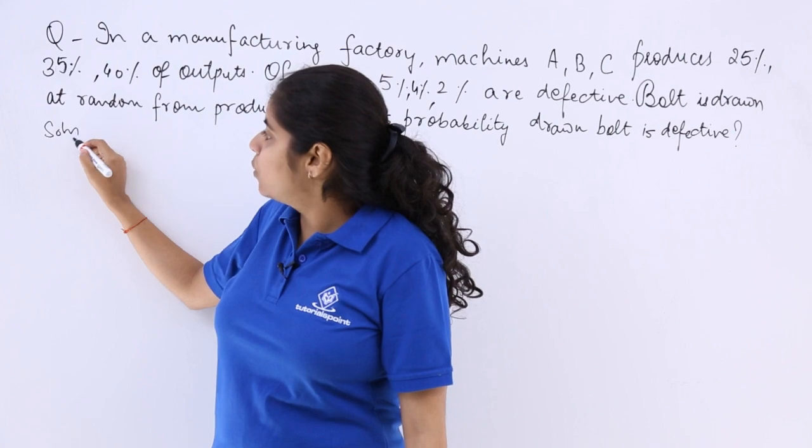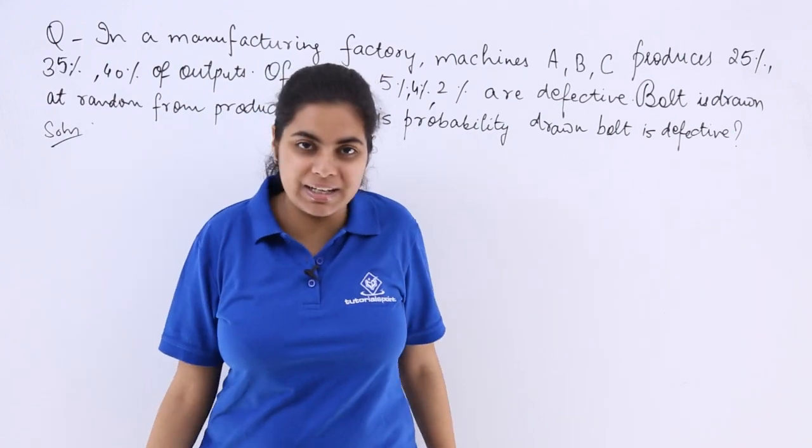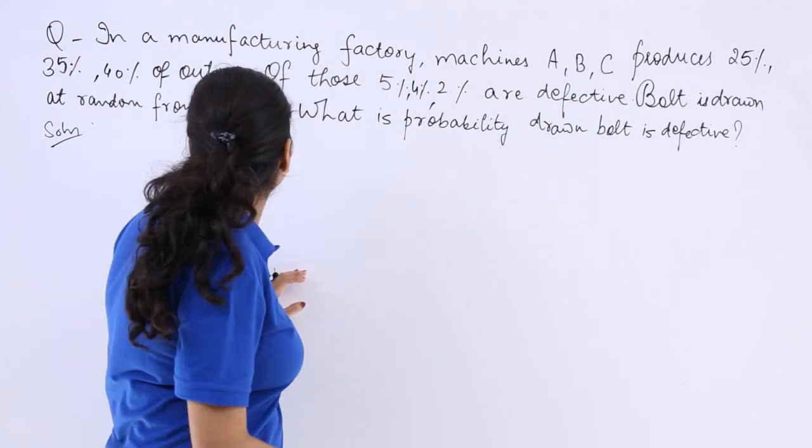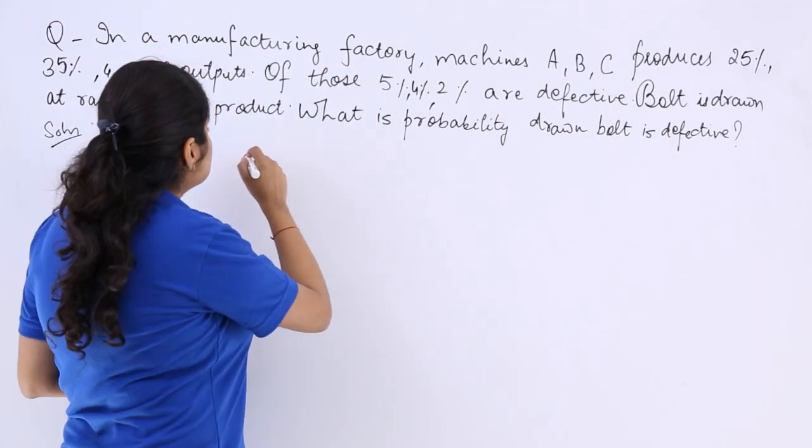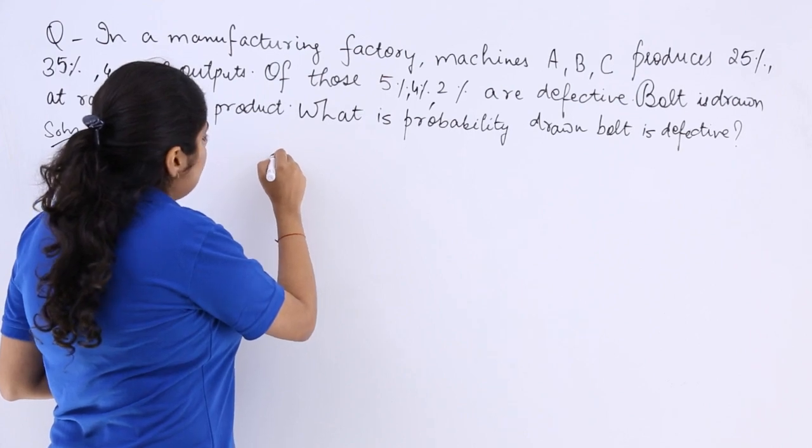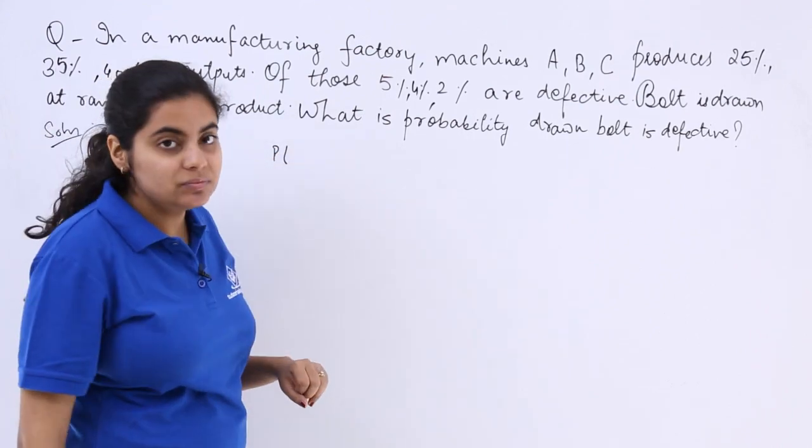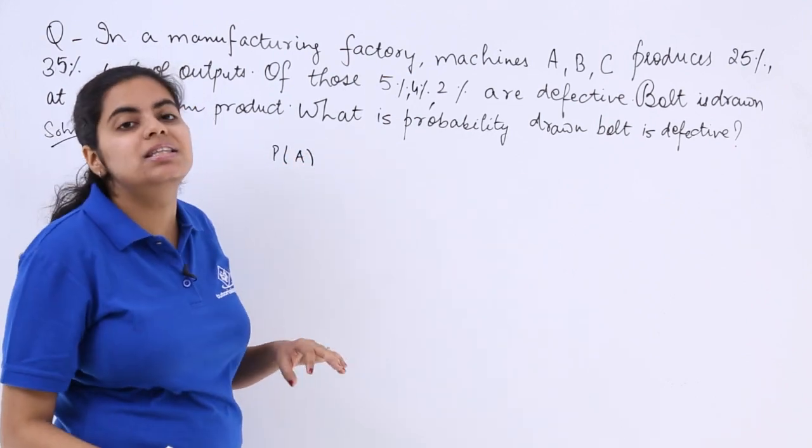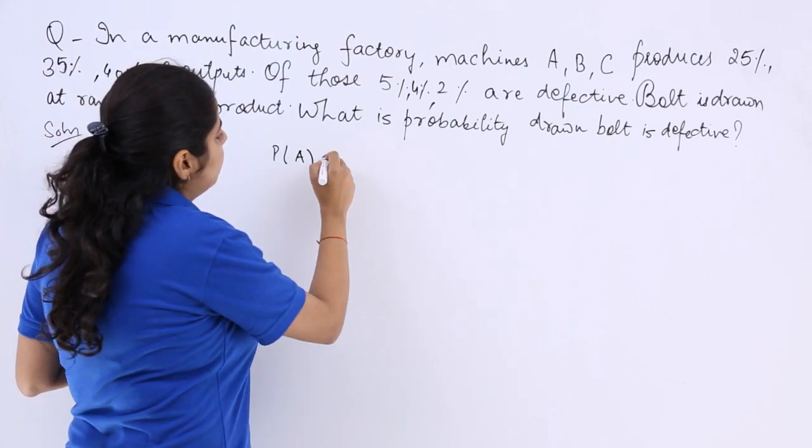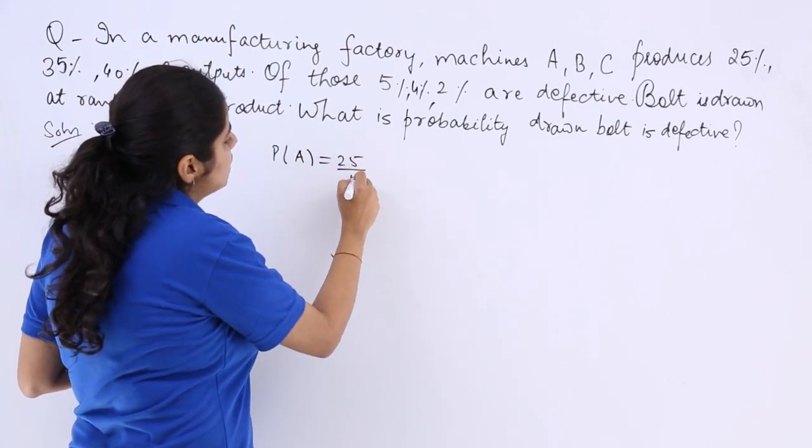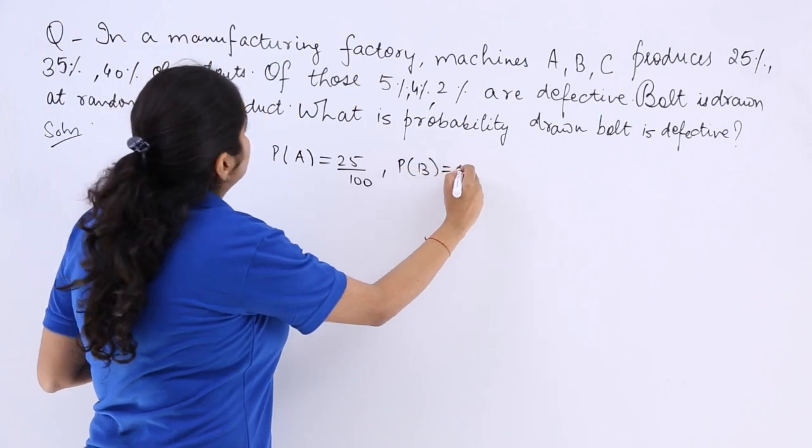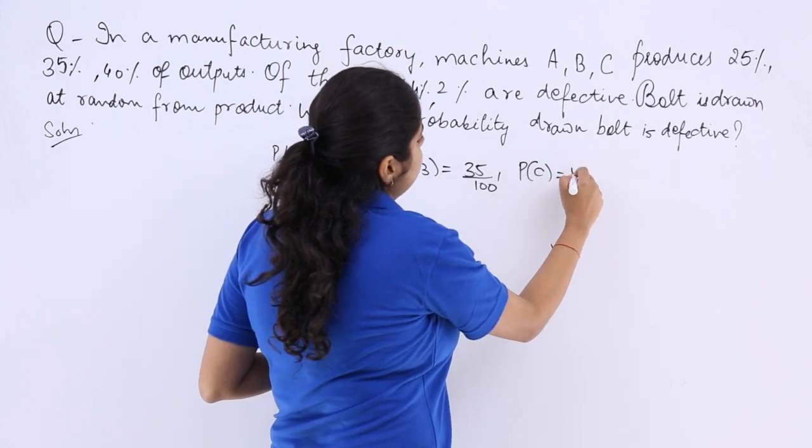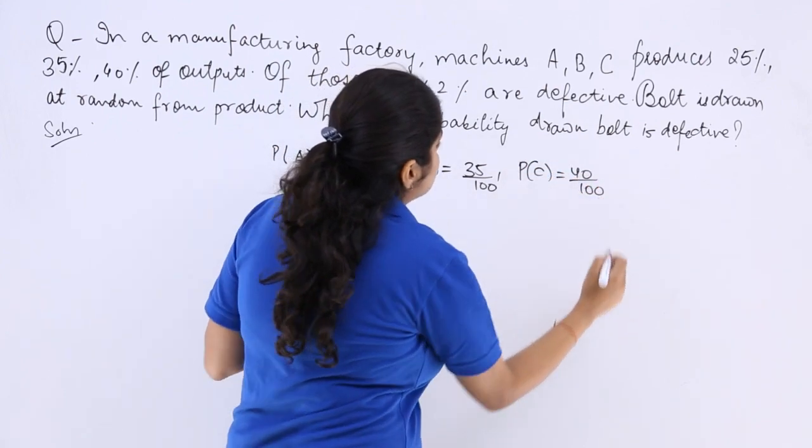So, I write solution and let's know what has been given and what do we need to find out. Machines A, B, C produce 25%, 35% and 40% of the outputs. Machine A, B, C, that means probability of having A, that means the output that is there, that is 25%. If I write according to B, is 35%, and if I write C, it is 40%. So this is A, B, C.